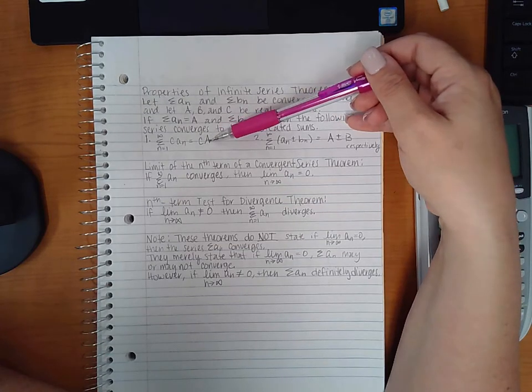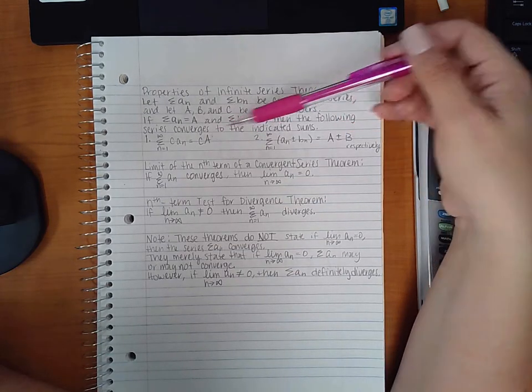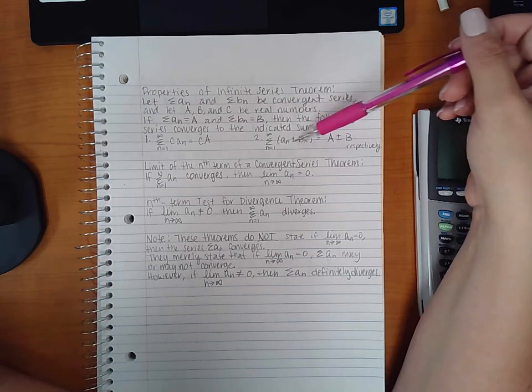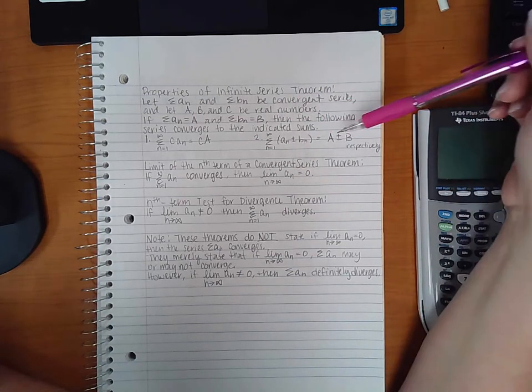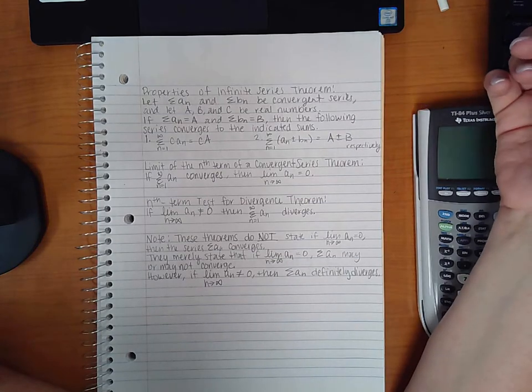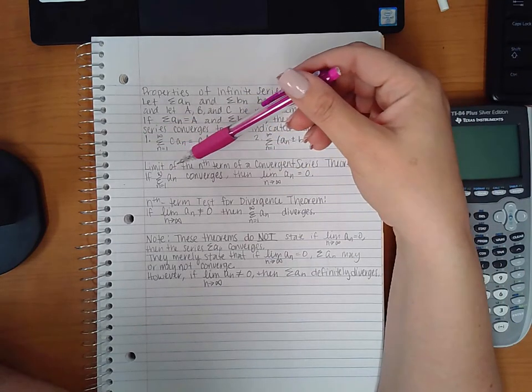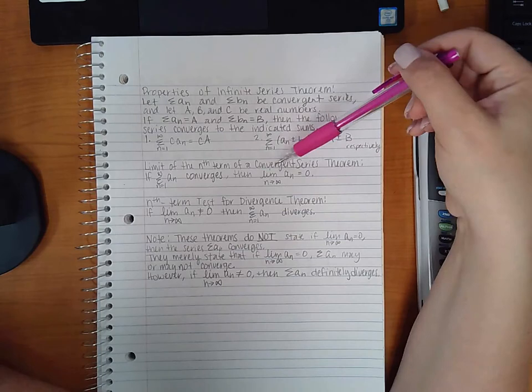So c times a constant will converge to the constant times the original sum without the c. If you're adding or subtracting the sum of two series, then you're basically adding or subtracting their sums. The limit of the nth term of a convergent series theorem...